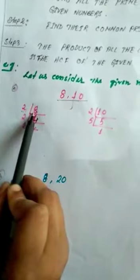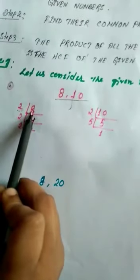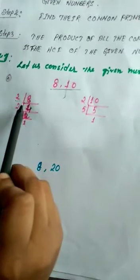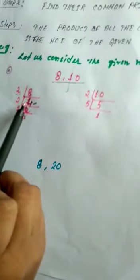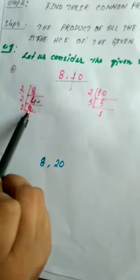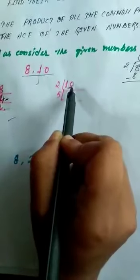For the number 8: we divide by 2, so 2 goes into 8 giving quotient 4. Then 2 goes into 4 giving 2. Then 2 goes into 2 giving 1. So we get the prime factors of 8. Similarly for 10: 2 goes into 10 giving 5, then 5 divided by 5 gives 1.